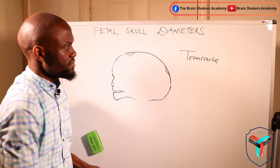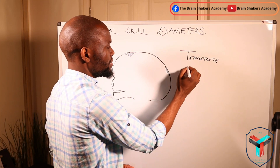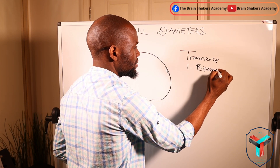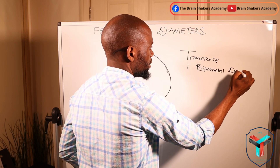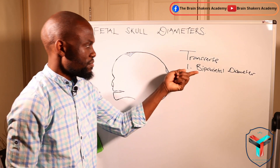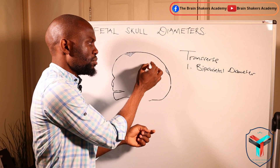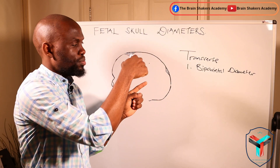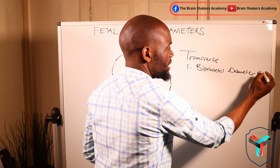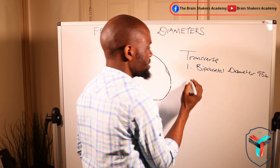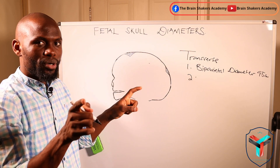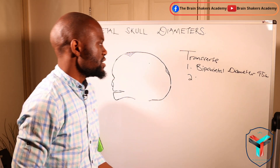From the transverse diameters, you have number one, you have what we call the bi-parietal diameter. The bi-parietal diameter — bi meaning from one parietal bone to another parietal bone. The bi-parietal diameter is about 9.5 centimeters. This is the diameter from one parietal eminence to another parietal eminence, about 9.5 centimeters.